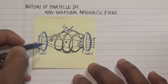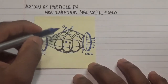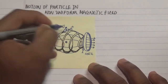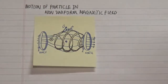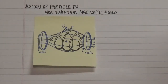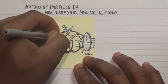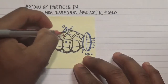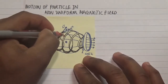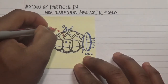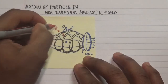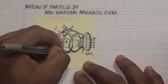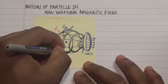Using the right-hand rule and checking the angles going from velocity to magnetic field, we find that we generate a force that is directed into this particular field — and that is our force at this first point.